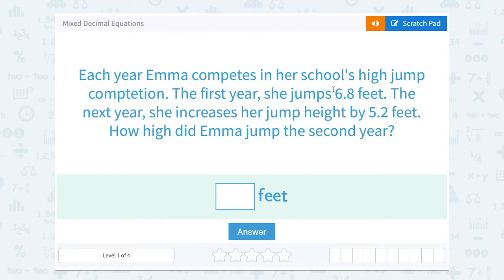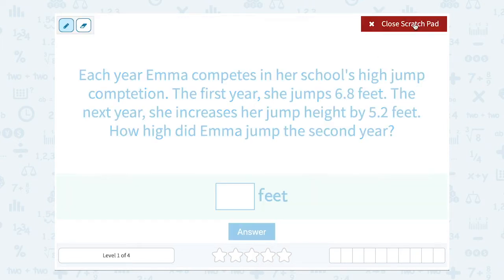The next year, she increases her jump height by 5.2 feet. How high did Emma jump on the second year? Well, if she started at 6.8 feet the first year, and she increases it by 5.2 feet, increases is a key word that's telling us we need to add those two numbers together.